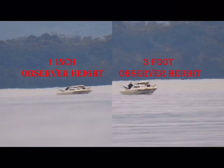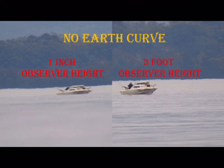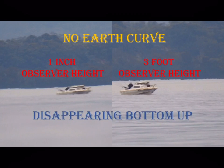Now comparing these two images, on the left, the observer height is one inch, and on the right, the observer height is three foot. And you can see clearly, that the boat has started to disappear bottom up. There is no earth curve, as you can see the horizon in the background. But both boats are starting to disappear bottom up.